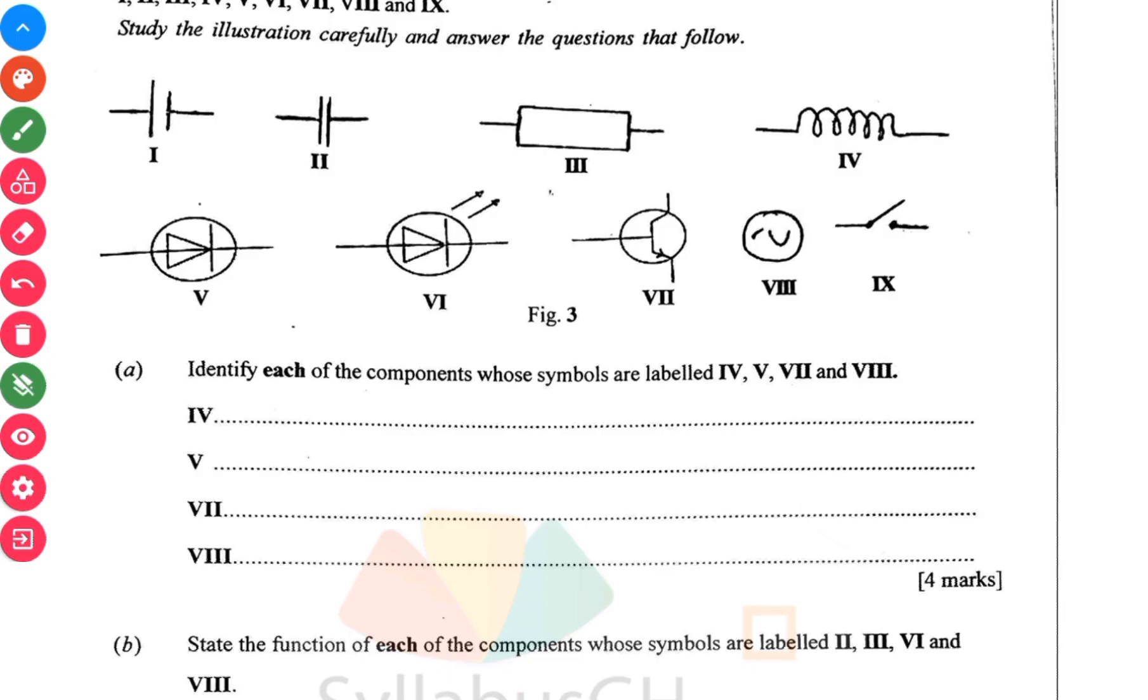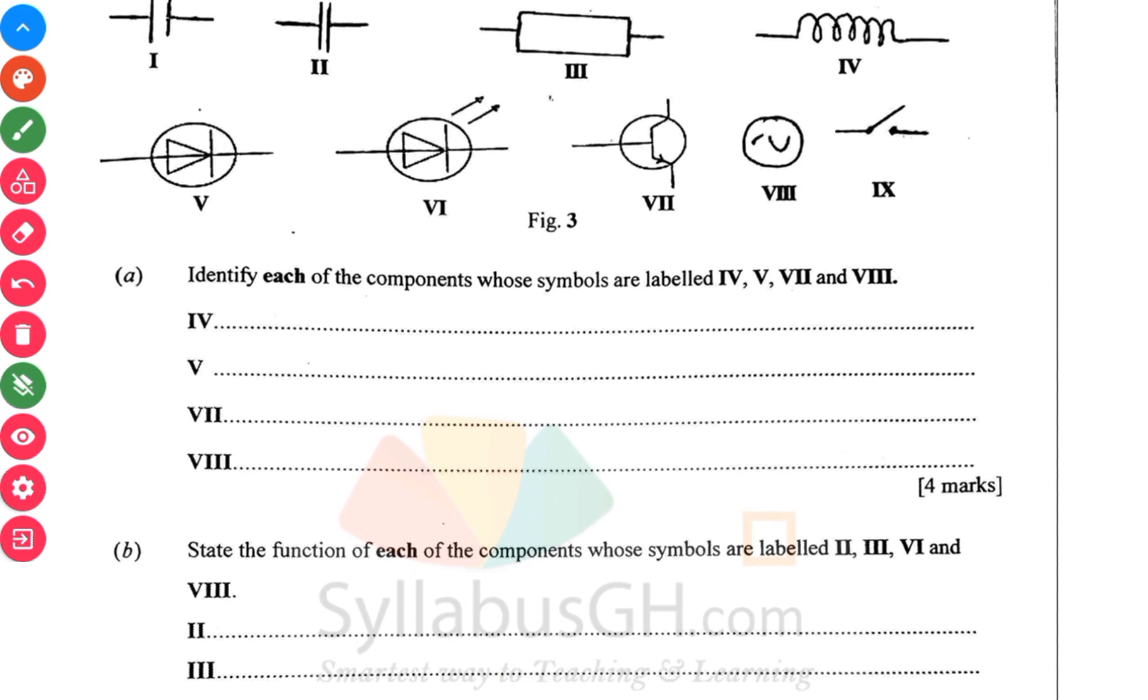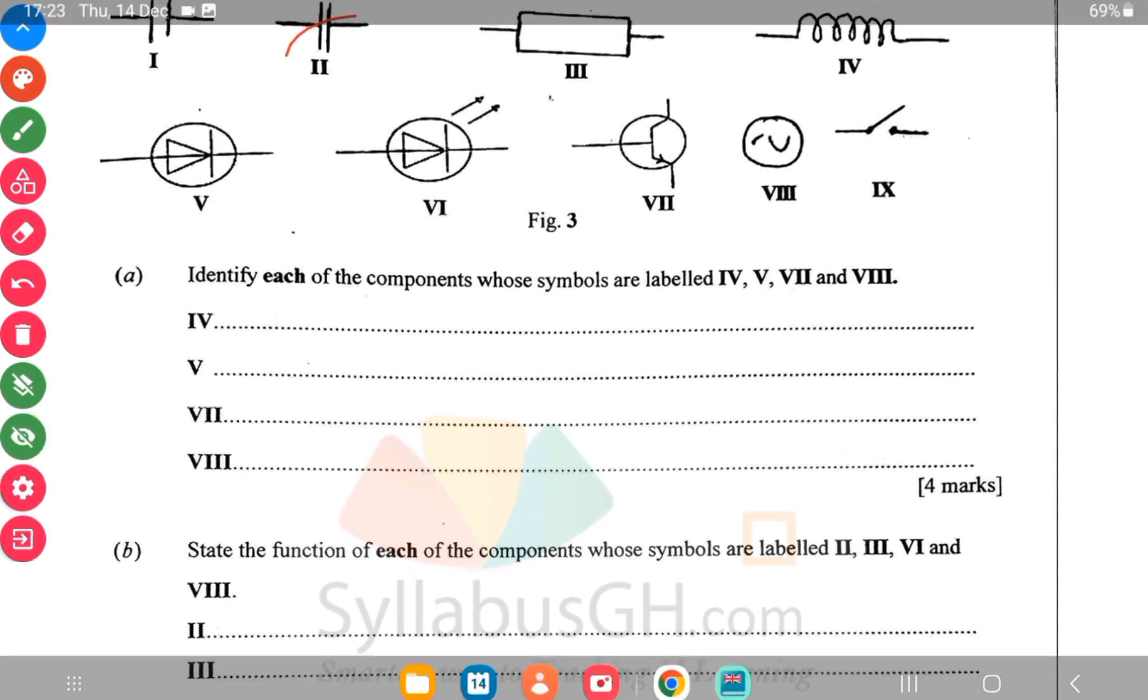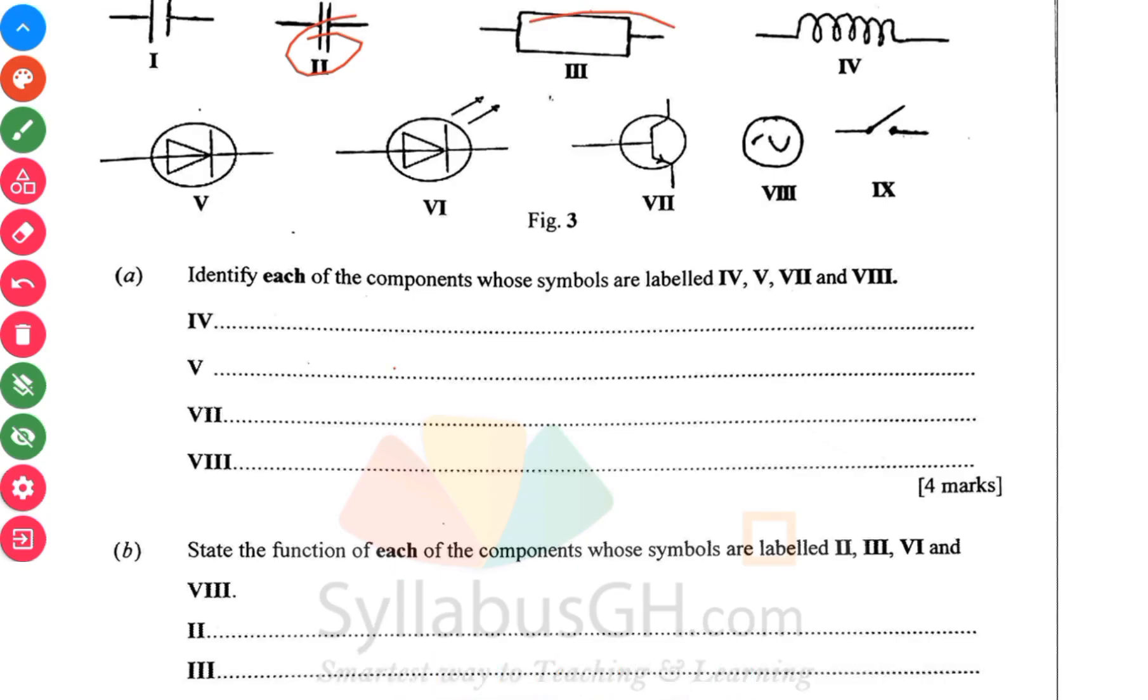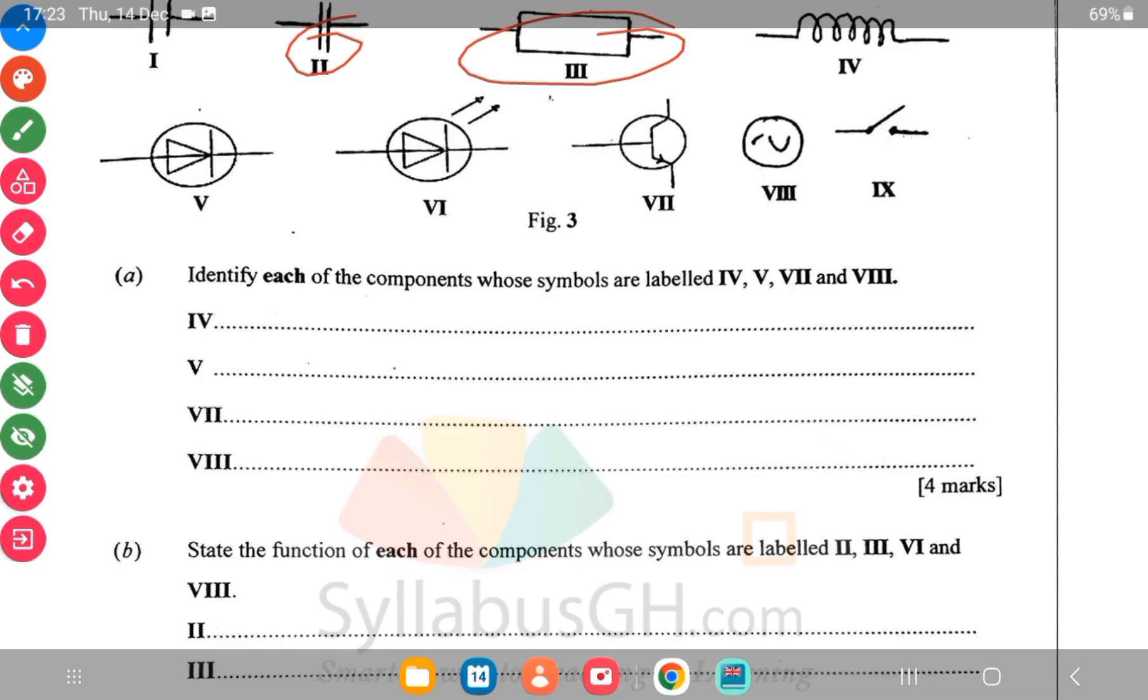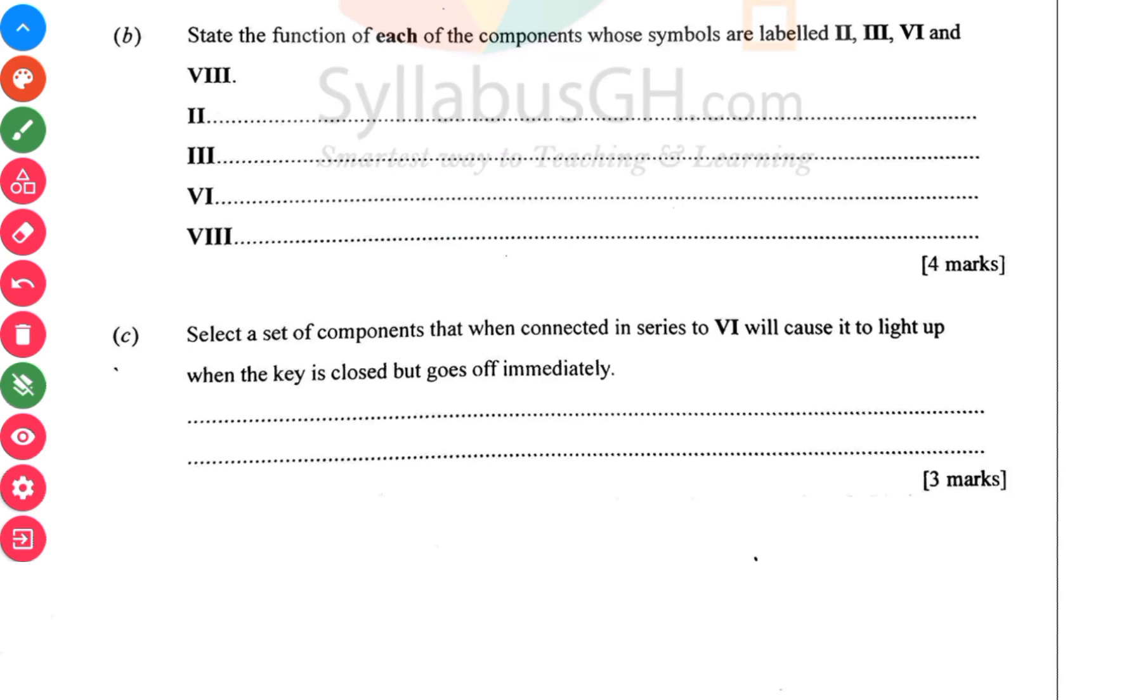State the function of II. II is a capacitor, capacitor stores electric charges. Then the next one, III, resistor opposes the flow of electric charges. Then VI, which is light emitting diode LED, it converts electrical energy to light energy. Then VIII, the alternating current source supplies alternating currents to an electronic device.